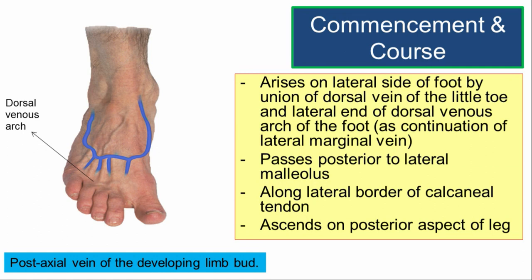The small saphenous vein is the post-axial vein of the developing limb bud. It arises on the lateral side of the foot by union of the dorsal vein of the little toe and the lateral end of the dorsal venous arch of the foot, as a continuation of the lateral marginal vein.